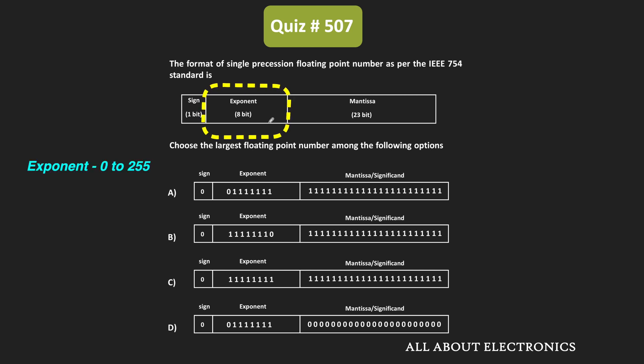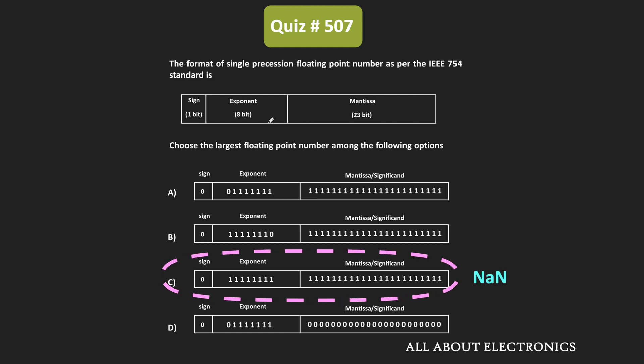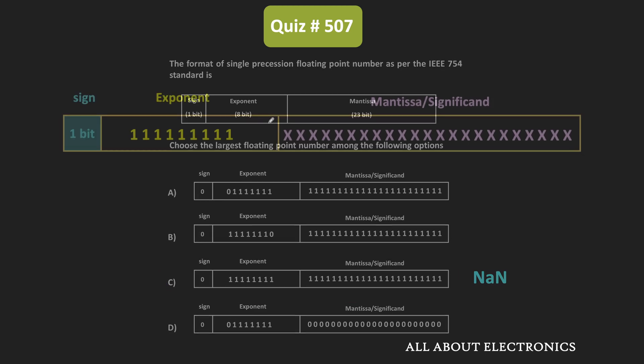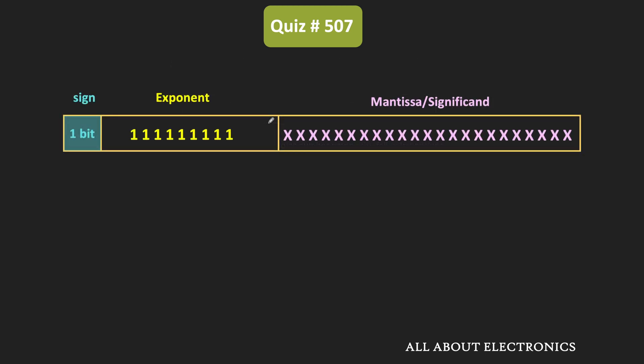For the 8 exponent bits, the exponent can vary from 0 to 255. But out of all these values, the exponent value of all zeros and all ones is reserved for special numbers. Looking at option C, it represents NaN — that is, Not a Number — because the exponent value is all ones and the mantissa part is also all ones. As per the IEEE standard, when the exponent is all ones and the mantissa is other than all zeros, that represents NaN, like 0/0 or infinity/infinity. So we can discard option C.